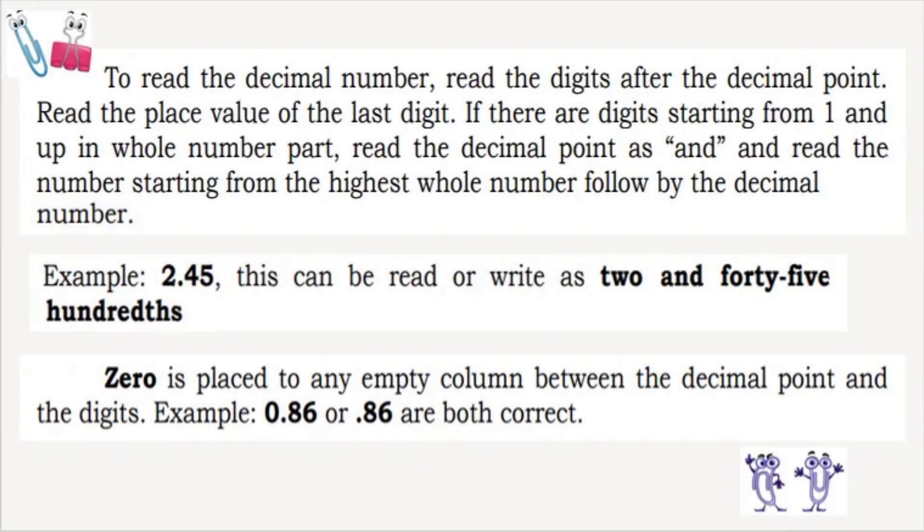Let's remember. To read a decimal number, read the digits after the decimal point and read the place value of the last digit. If there are digits starting from 1 and up in the whole number part, read the decimal point as AND. Then read the number starting from the highest whole number followed by the decimal number.